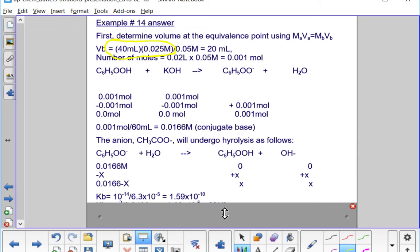I can find KB. We were given KA for benzoic acid. I need to find KB because now I'm talking about a base here, the conjugate base of benzoic acid.